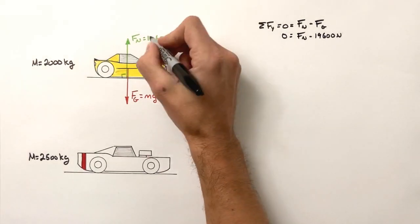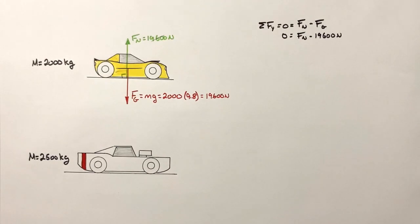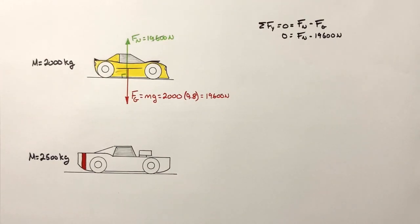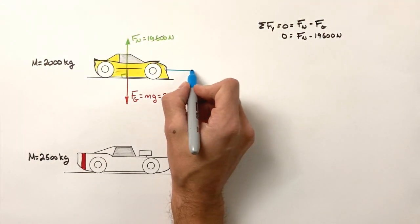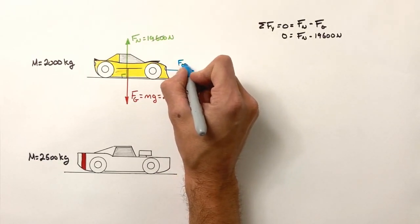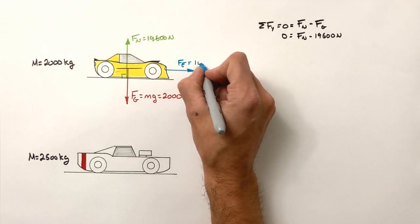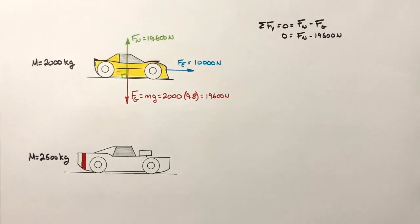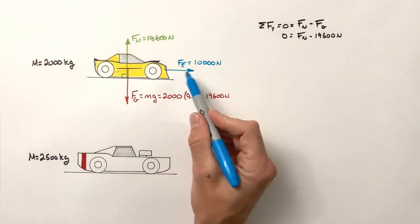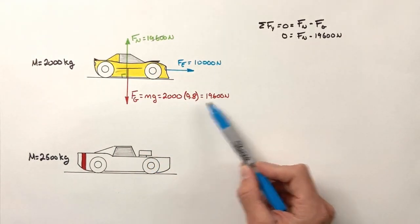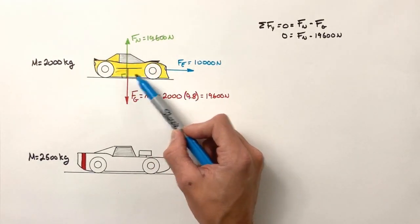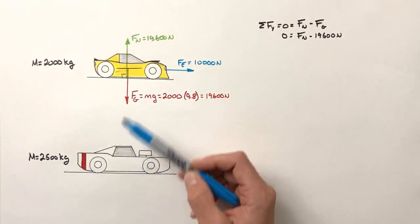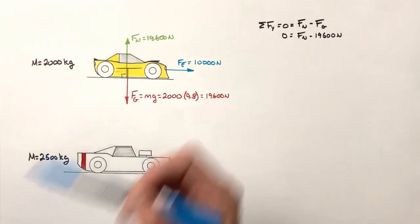The vertical forces cancel each other out, so they don't come into play in this race — this race isn't uphill or downhill. What there is on this car is a force forward by the engine of 10,000 newtons. How the engine transmits that force to the ground — gears and friction and all that — we'll get into later. On a free body diagram, we make sure to not only show the forces acting on an object and what direction they're acting in, but also represent the magnitude of those forces with the lengths of the arrows depicted. The larger forces of 19,600 newtons are drawn with longer arrows, while this smaller force of 10,000 newtons has a shorter arrow.